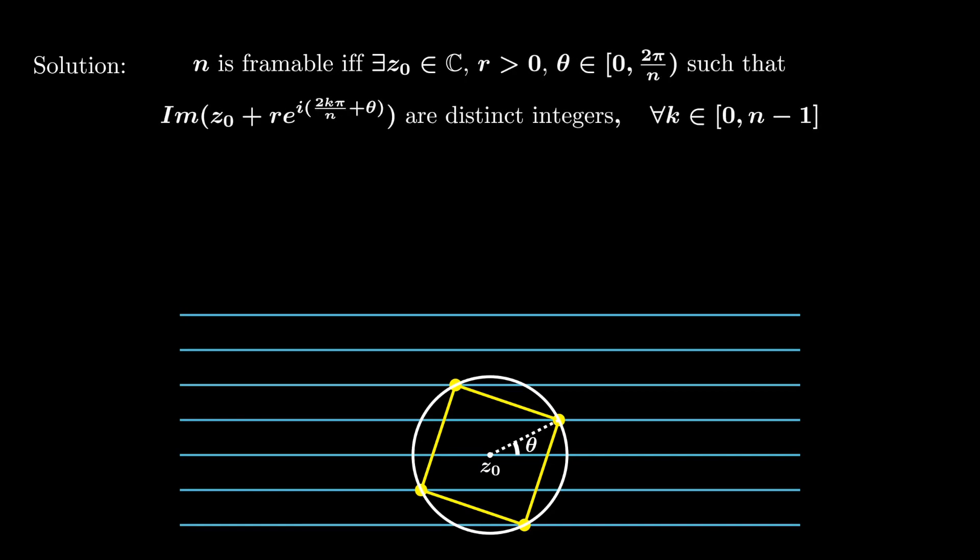To summarize, n is frameable if and only if there exists a shifting parameter z₀, a scaling parameter r, and a rotation parameter θ, such that the imaginary part of the vertices are distinct integers. Now let's decompose z₀ as x₀ + iy₀. Then the imaginary part of the vertices are given by y₀ + r sin(2kπ/n + θ). And n is frameable if these numbers are distinct integers.